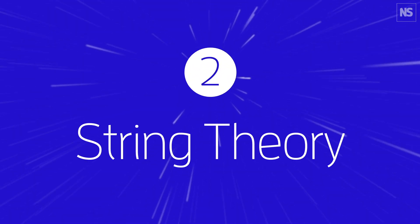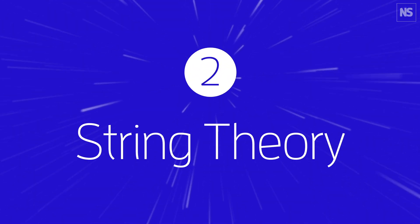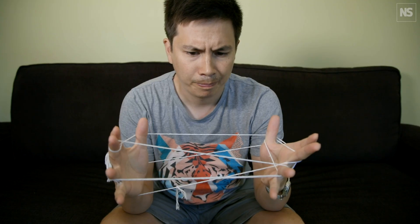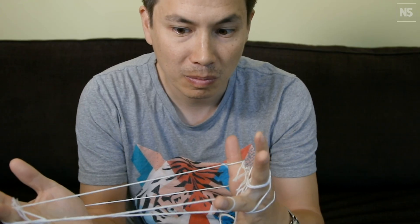Number 2: String theory is one way that physicists have tried to unite the universe under one set of very complicated rules. However, it requires some serious theoretical reimagining of reality to make it work. And it predicts a frankly ridiculous number of universes — maybe even 10 to the 500 or more — each one with slightly different physical parameters. The calculations make sense in theory, but it's notoriously difficult to test these ideas in reality.